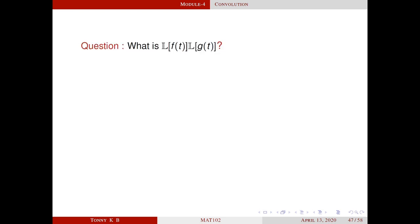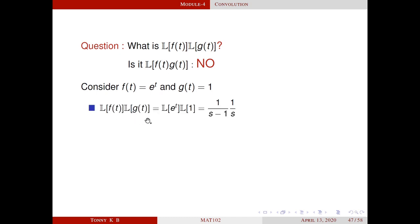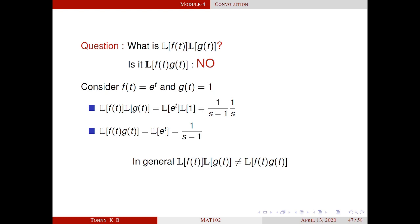Next, we analyze what is L{f(t)} · L{g(t)}. Is it L{f(t) · g(t)}? No. Consider the example f(t) = e^t and g(t) = 1. We compute L{e^t} · L{1}, which equals 1/(s−1) · 1/s. Next, L{f(t) · g(t)} = L{e^t · 1} = L{e^t} = 1/(s−1). From this example, it is clear that they are not equal. So in general, L{f(t)} · L{g(t)} is not equal to L{f(t) · g(t)}. Our question remains: what is L{f(t)} · L{g(t)}?